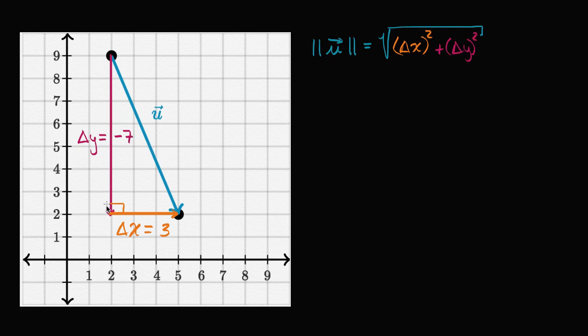If you view this as a triangle, all you care about is the length of this side, or the magnitude, or the absolute value, which is positive seven. The magnitude of our vector equals: three squared is nine, and negative seven squared is positive 49, so nine plus 49.